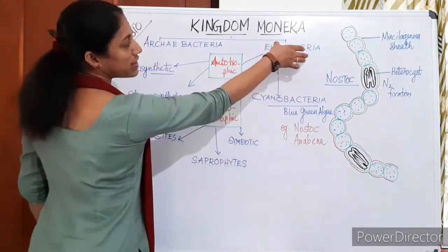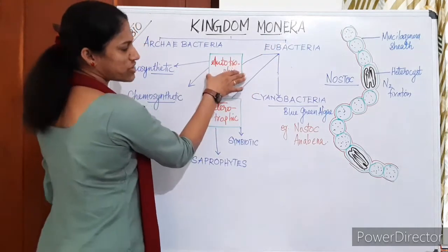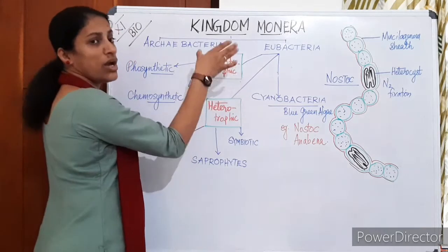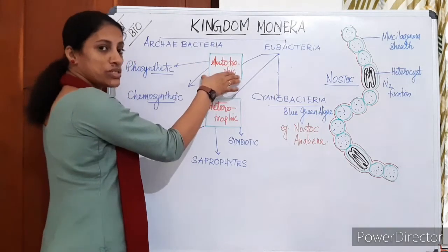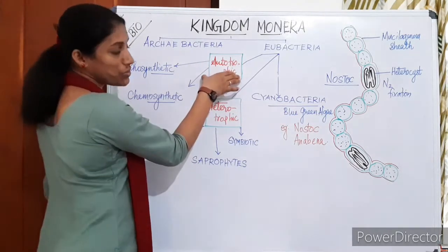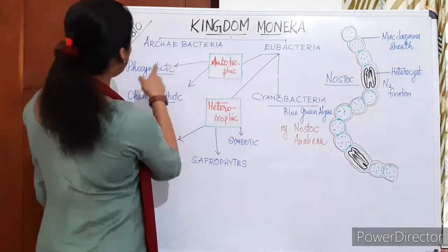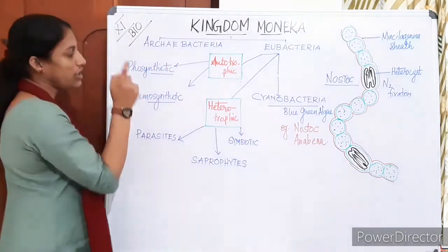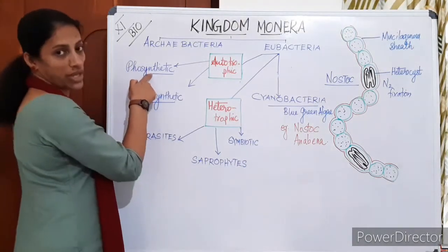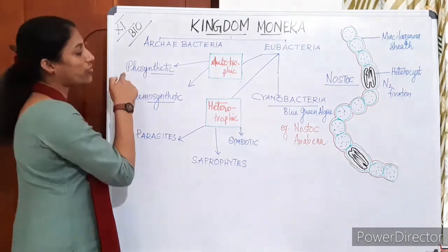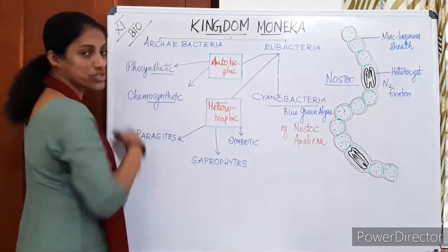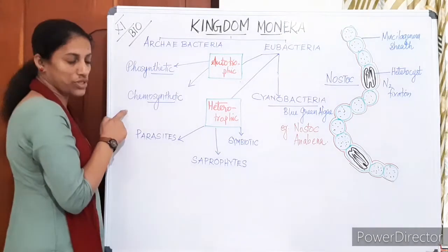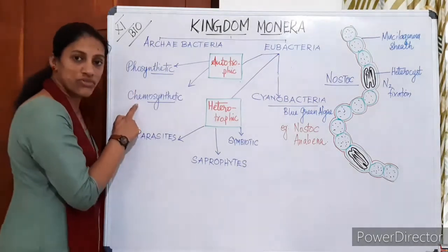The second type of Eubacteria is autotrophic bacteria. These bacteria can produce their own food, either using sunlight or chemical energy. If they use sunlight they are phototrophs or photosynthetic. If they depend on chemical energy for producing food, they are chemotrophs.